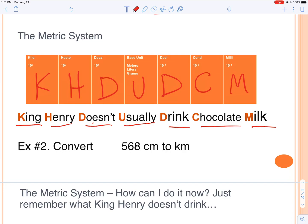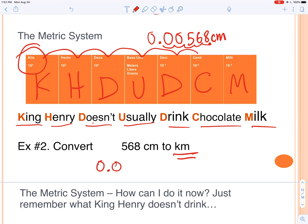So again, we're starting with 568 centimeters, so we'll go here. And we're trying to convert to kilometers, which is all the way over here. So all we have to do is count how many spots it takes to get there. So it takes one, two, three, four, five different spots away. So I'm going to take my decimal and I'm going to move it five spots. One, two, three, four, five. So our final answer here is going to be 0.00568.